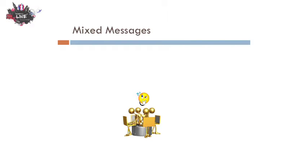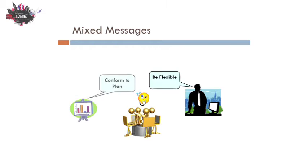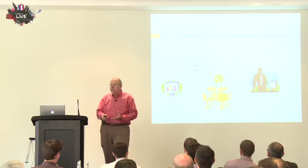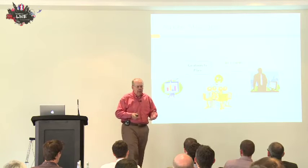Another thing that happens in agile teams: have you ever been in this dilemma? Be flexible, be agile, be adaptable — but meet the plan. And that plan is usually the traditional plan of scope, schedule, and cost — the traditional iron triangle. So I think we need to figure out how to get away from that.